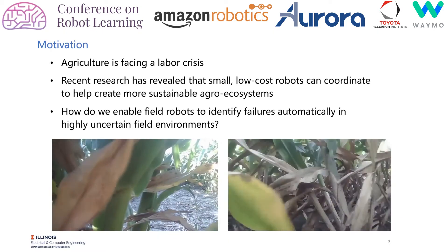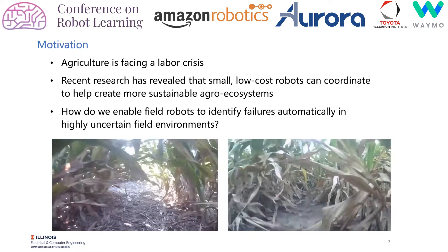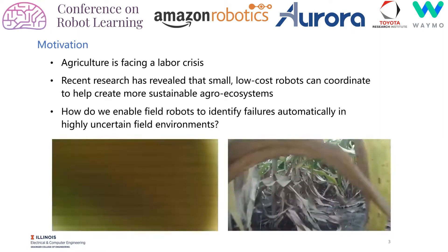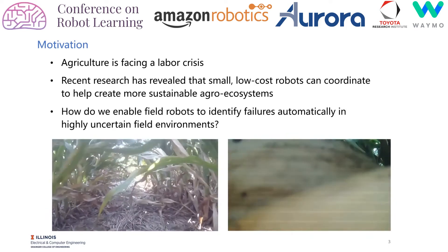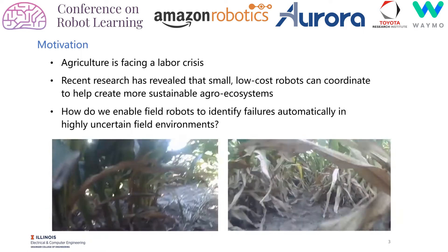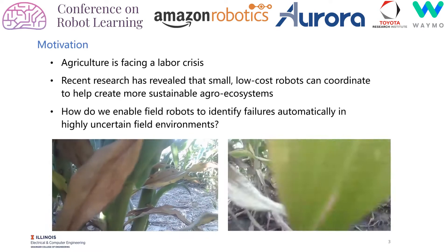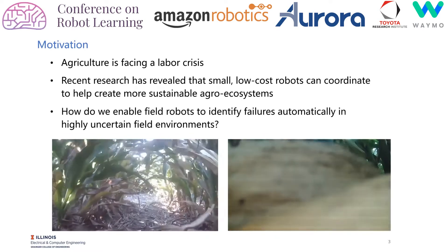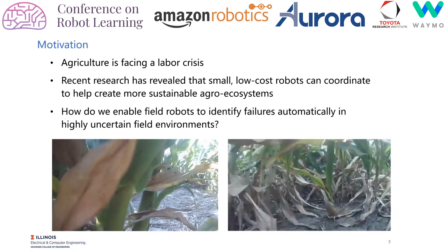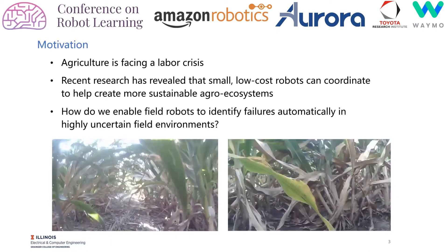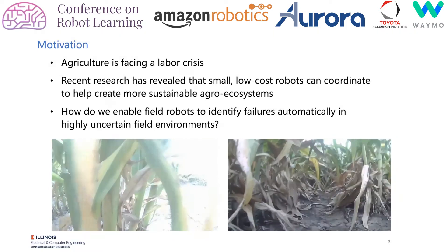In practice, however, due to unstructured and highly uncertain operating environments, robots are likely to encounter various types of failures. On the left, you can see the robot deviates from the center line and climbs into the left row of crops. And on the right, the robot encounters lodged plants which obstruct the path. The main goal of this work is to enable robots to identify and therefore recover from failures automatically in highly uncertain field environments.